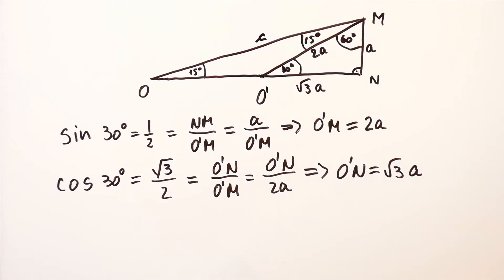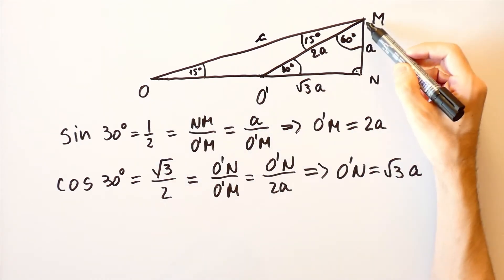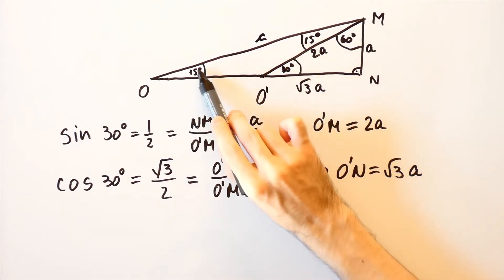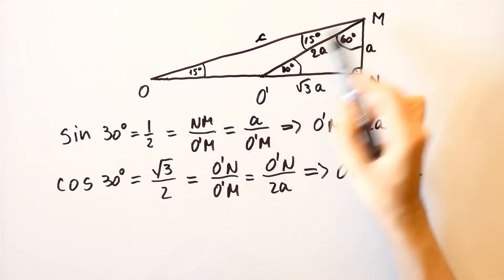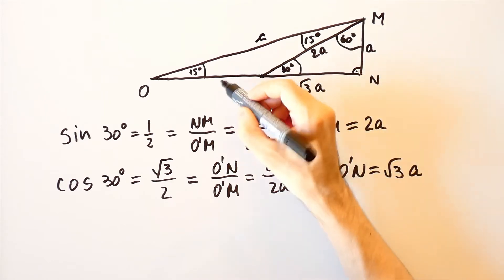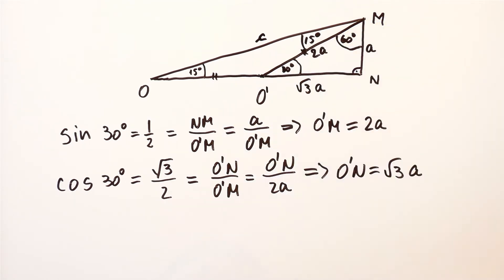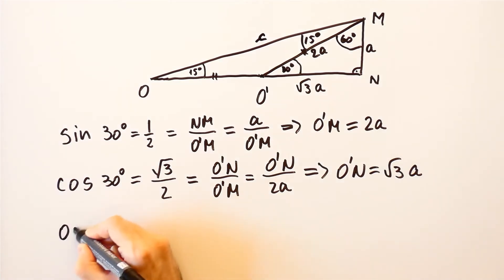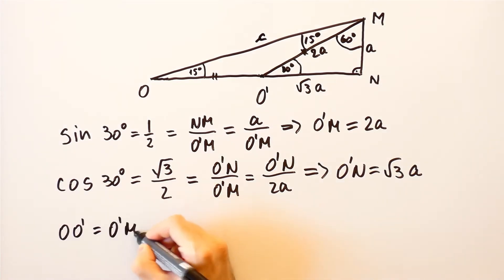Now, if we look at the triangle O O prime m, since these two angles are equal, then the triangle O O prime m is an isosceles triangle, which means that O O prime is equal to O prime m. So O O prime is equal to O prime m, which is equal to 2A.